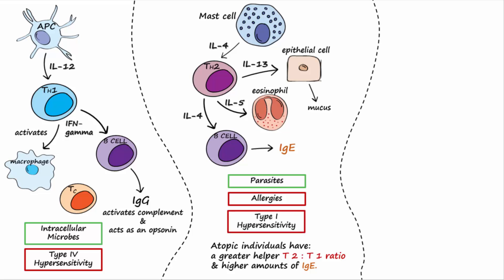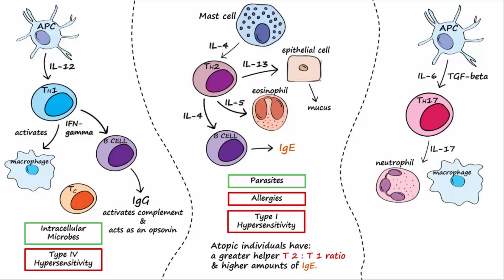With secretion of IL-6 and transforming growth factor beta, the naive T helper cell will mature into a T helper 17, which will produce IL-17 to recruit phagocytic cells like neutrophils and macrophages to tissues that are infected with certain extracellular bacteria and fungi.